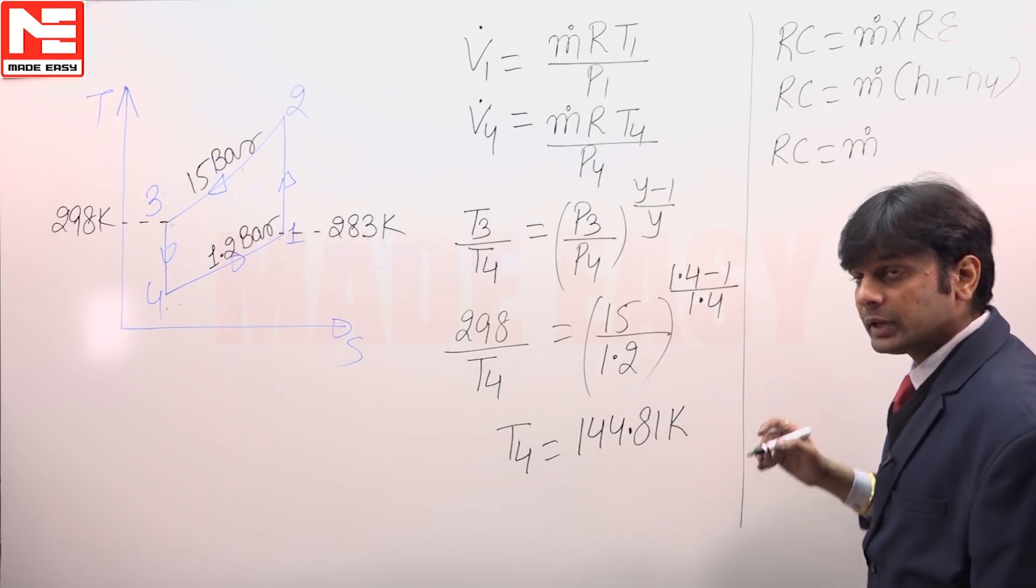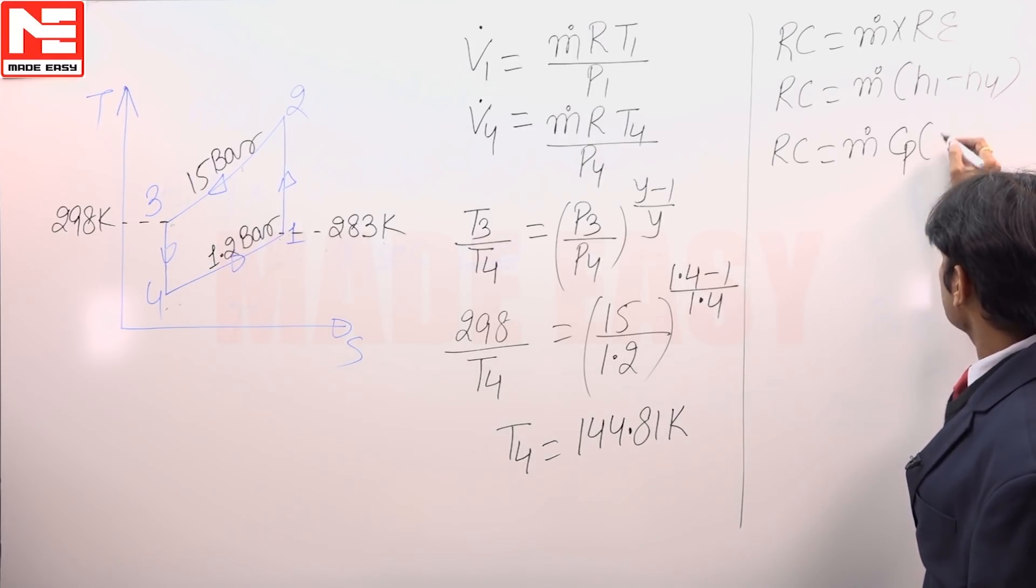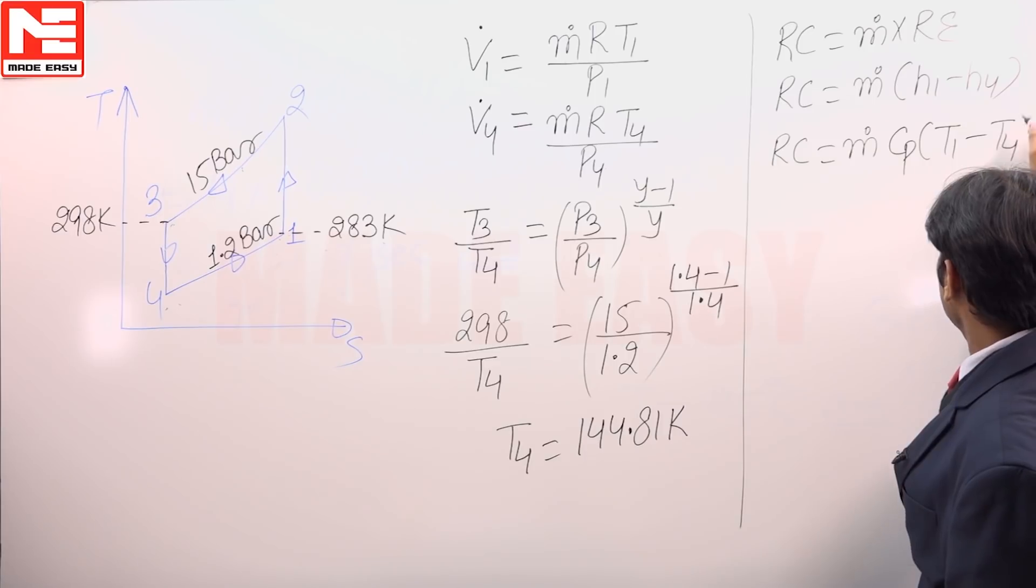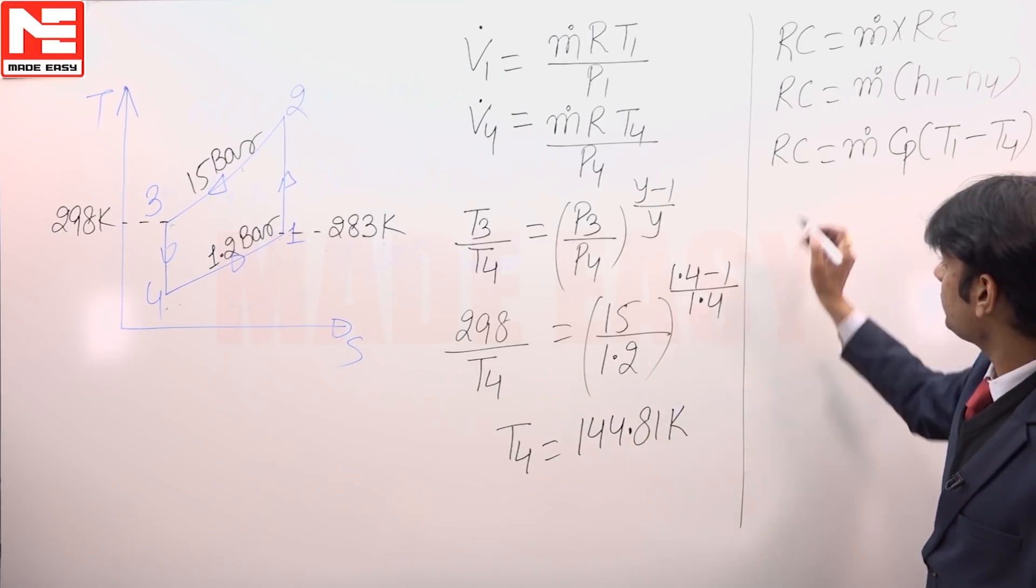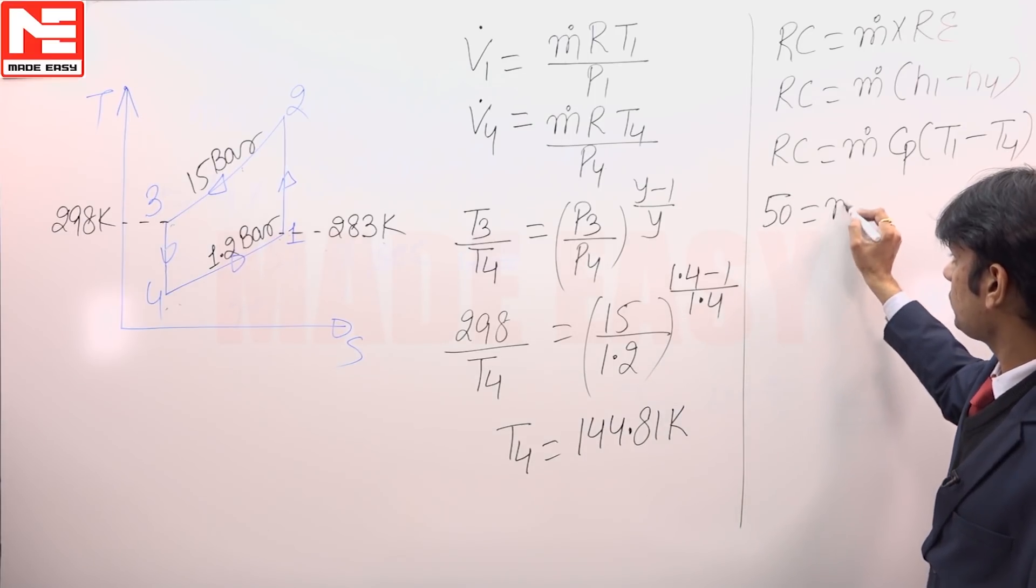So RC equals M dot into CP times T1 minus T4. The RC is given as 50 kilowatt. The only unknown factor is M dot in this equation.